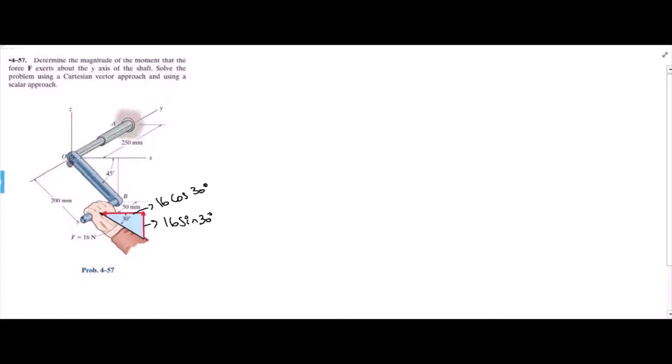Now we have to resolve the moment arm. The moment arm is taken from point O to point B. So this is our moment arm. Now we also have to resolve this moment arm. This moment arm has two components, one parallel to the x-axis and another one parallel to the z-axis. This component is in millimeters, so we will convert it into meters. So it is 0.2 sin 45 degrees and this component is 0.2 cos 45 degrees. Now we have resolved the moment arm and the force into its components.